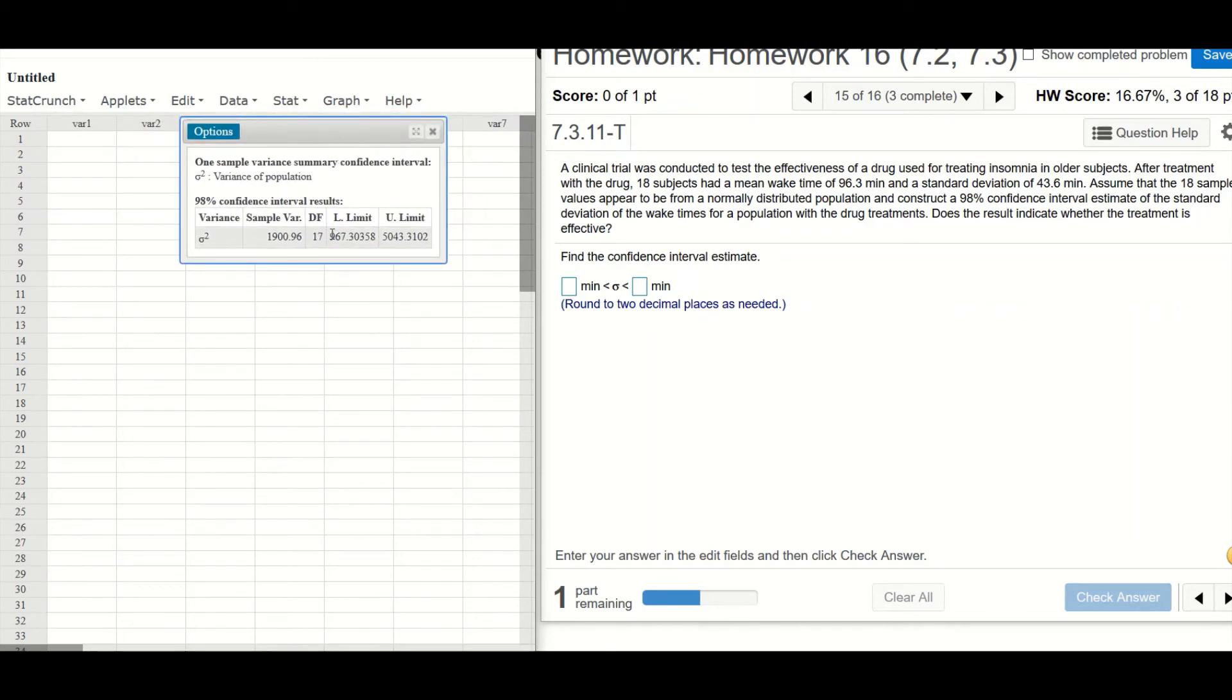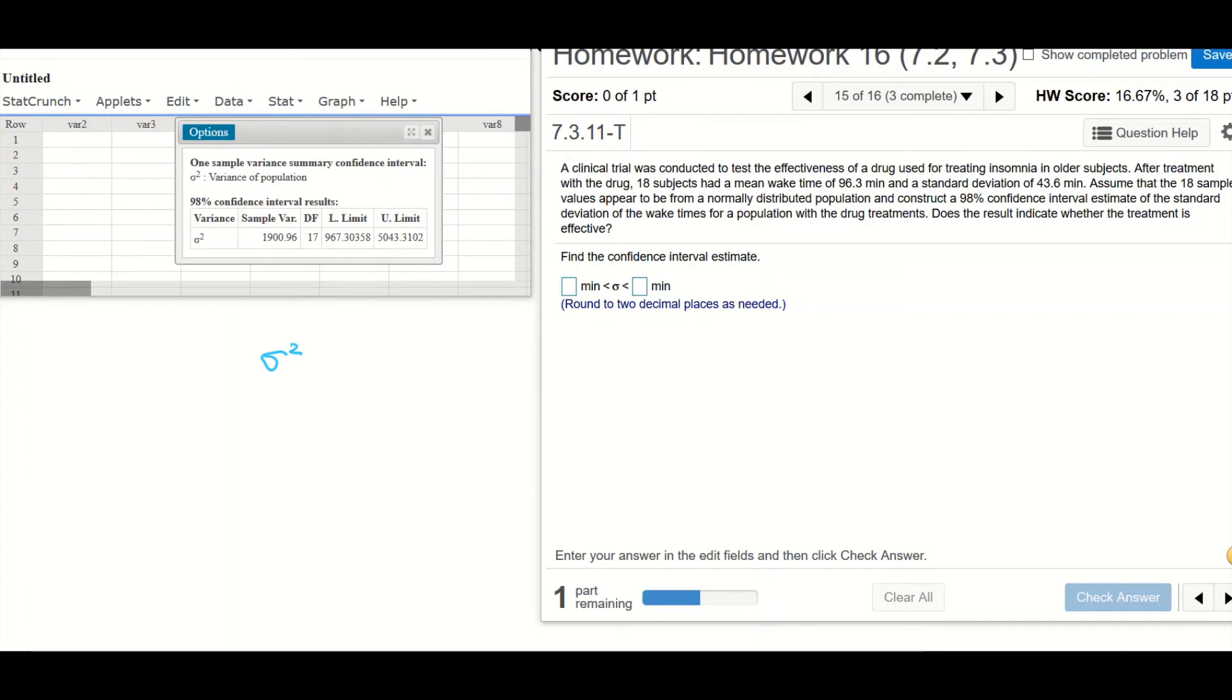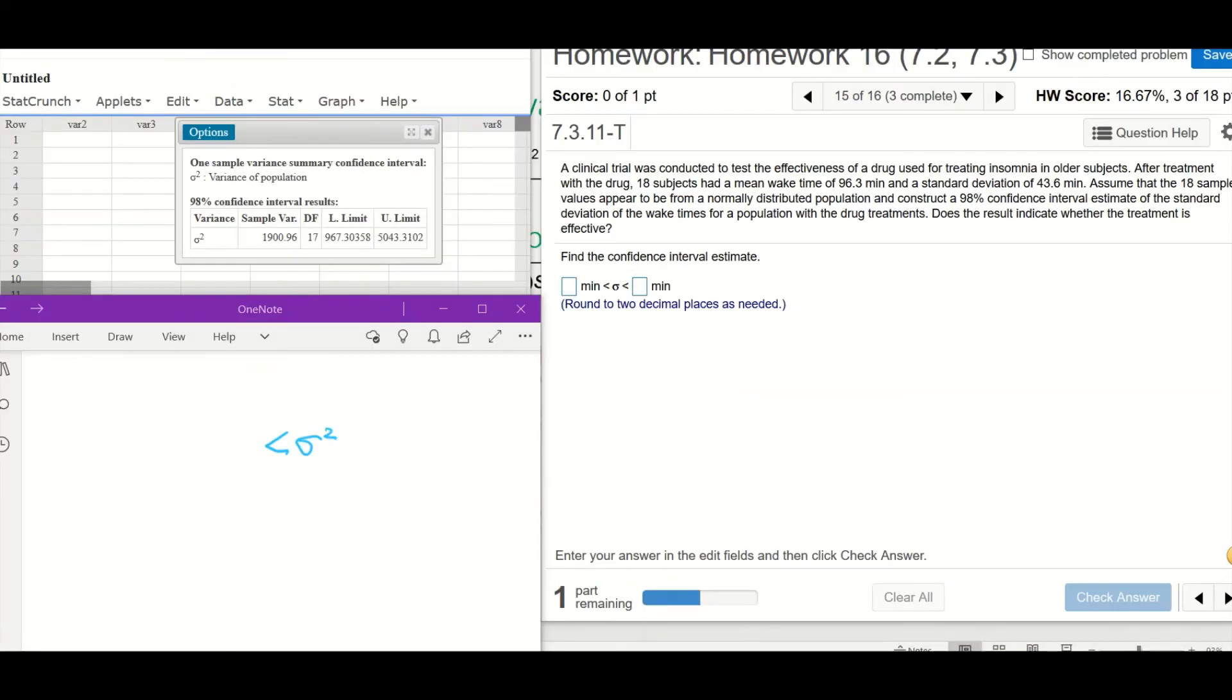And I will put compute. All right, here you have a lower limit and upper limit for the confidence interval for the variance. Right? What's given here is the variance. So that means the variance is estimated to between these two values. The lower bound is 967.304. The upper bound is 5,043.310.